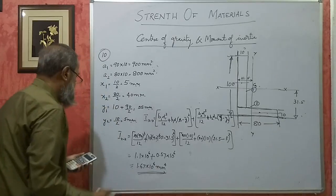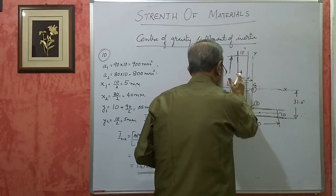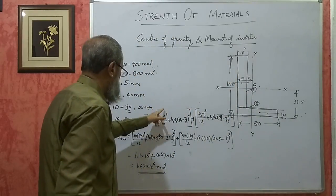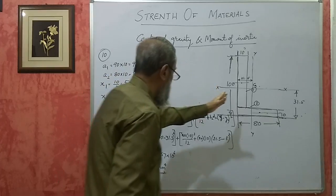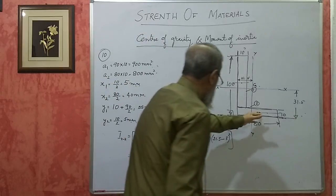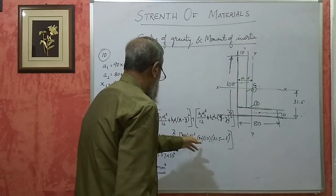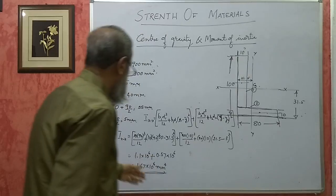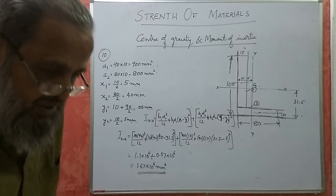Similarly, if you want Iyy, you transfer using D1·B1³/12 + A1·(X̄ − X1)² for rectangle 1, and D2·B2³/12 + A2·(X2 − X̄)² for rectangle 2. The same parallel axis theorem approach applies. I hope you have understood it.